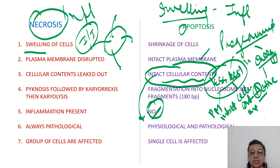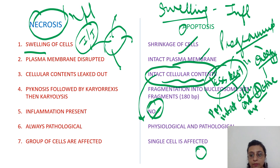Swelling of the cells occurs in necrosis, whereas shrinkage of the cells occurs in apoptosis, where every part along with certain organelles will be pinched off to form apoptotic bodies.